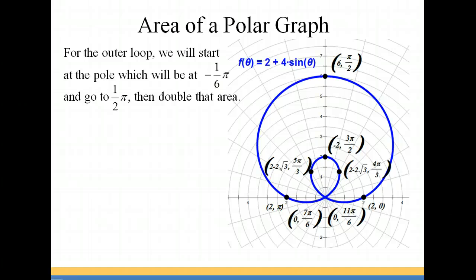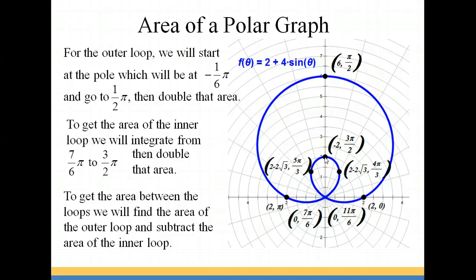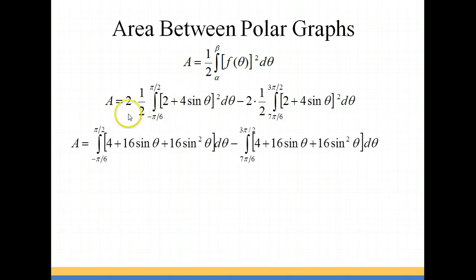So we're going to set up our integral for the outer loop starting at negative π/6 — which corresponds to 11π/6 — and increasing up to π/2. For the inner loop, we integrate from 7π/6 looping around to 11π/6, but since we're only taking half, we stop at 3π/2. To get the area in between the loops, we subtract those two areas. Starting with our formula and plugging in our equation, 2 plus 4 sine theta, both integrals are worked the same way. We double both areas since we're only integrating half, and simplify: 2 times 1 half becomes 1, and we expand (2 + 4 sine θ)² on both integrals.